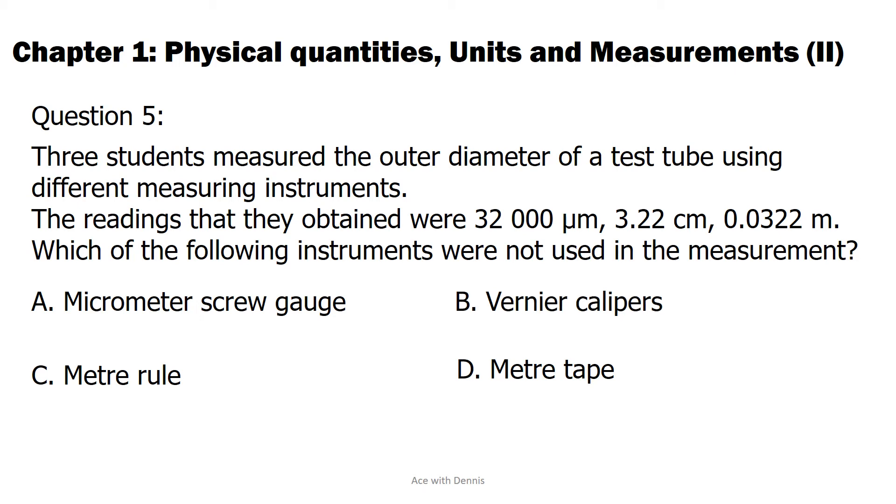The answer is A. Micrometer Screw Gauge. The precision of micrometer screw gauge is 0.001 centimeters or 0.01 millimeters. None of the readings has this precision.